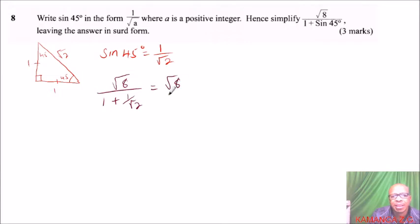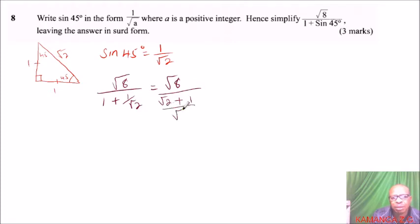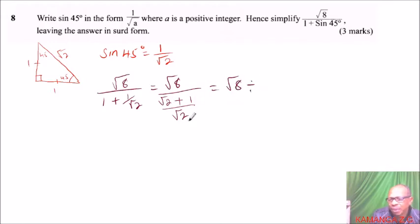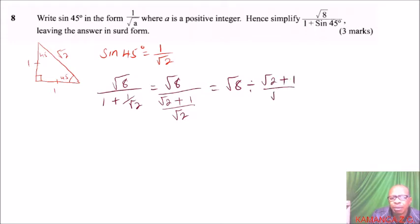So this is root 8 divided by — you can cross multiply. This is 1 times root 2, you get root 2 plus root 2 divided by root 2 is 1 times 1, which is 1. So you get the LCM here, which is root 2. To understand it better — though this step is not strictly necessary — it is root 2 plus 1 divided by root 2.